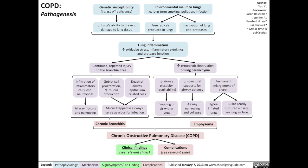Simultaneously, inflammation in the lungs results in increased proteolytic destruction of lung parenchyma. Basically, the proteins of the lung tissue are destroyed by proteases — enzymes that destroy protein. This breakdown of the lung tissue results in reduced airway elasticity, basically reducing the recoil ability of the lung and reducing the lung's ability to push air back out once the lungs have been inflated by expansion of the chest wall.